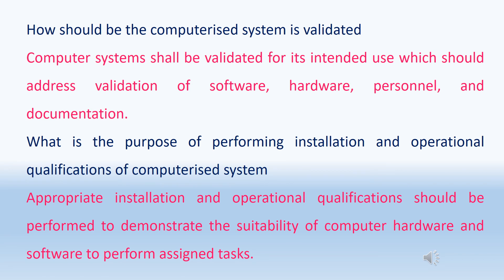How should a computerized system be validated? Computer systems shall be validated for their intended use. Computerized system validation should address validation of software, hardware, personnel, and documentation. Appropriate installation and operational qualifications should be performed to demonstrate the suitability of computer hardware and software to perform assigned tasks.